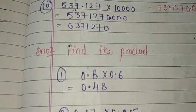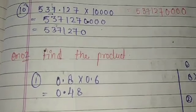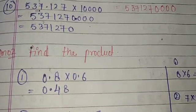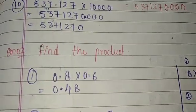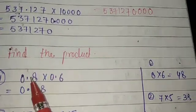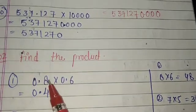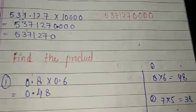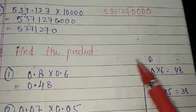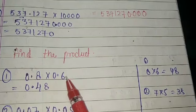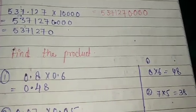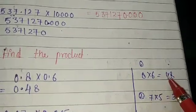Now Question 2 — Find the product. Here you have two different decimal digits; this is not 10, 100, or 1000. So what do you do? First observe the digits. I see 0.8 and 0.6. Forget the decimal points — I have 8 and 6. Since leading zero is meaningless, I take 8 and 6. 8 times 6 is 48.